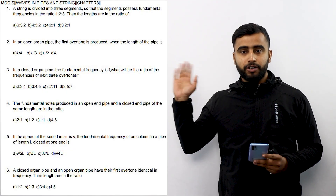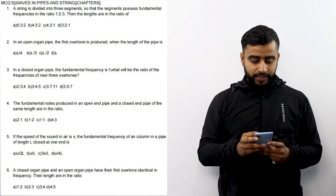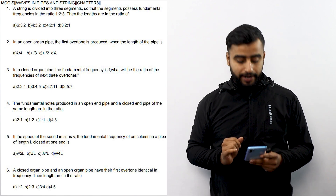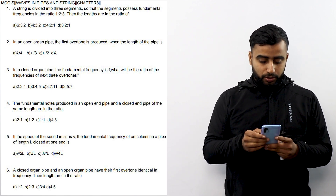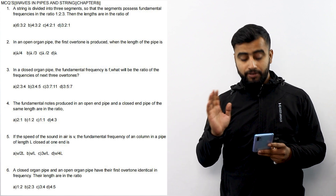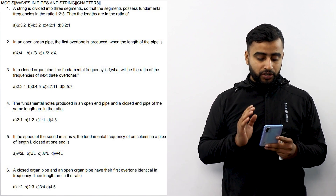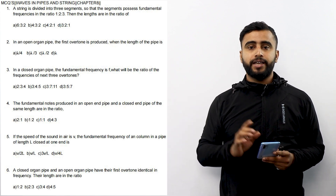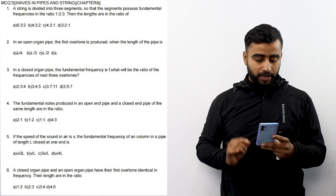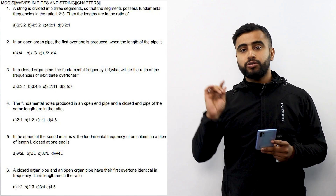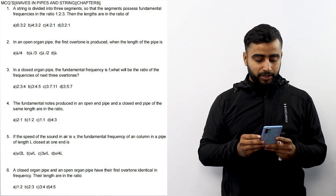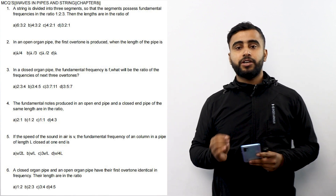MCQ number 1: A string is divided into 3 segments so that the segments possess fundamental frequencies in the ratio 1:2:3, that is F1:F2:F3 = 1:2:3. Then the length of the segments are in the ratio?